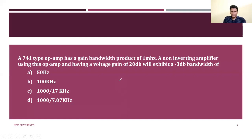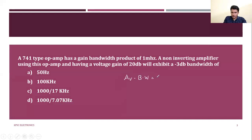We need to find the minus 3dB bandwidth. The voltage gain AV and the bandwidth product is 1 MHz, meaning AV multiplied by bandwidth equals 1 MHz.